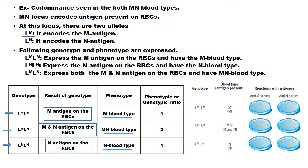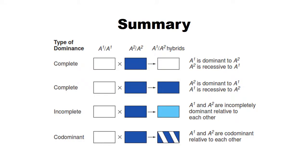In co-dominance, the phenotypic ratio and genotypic ratio is 1:2:1. This is the summary of the extension of law of dominance. There are two pure breed individuals: a white colored individual with genotype A1-A1 and a blue colored individual with genotype A2-A2. If a cross is made between these two breeds, then there will be three possibilities.